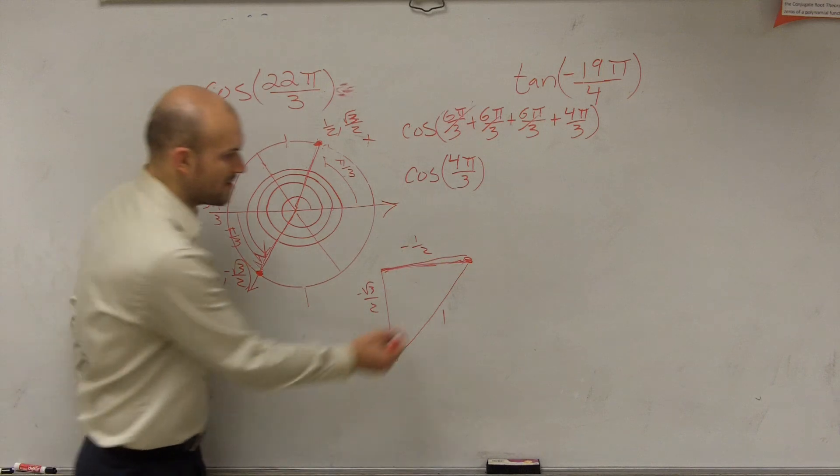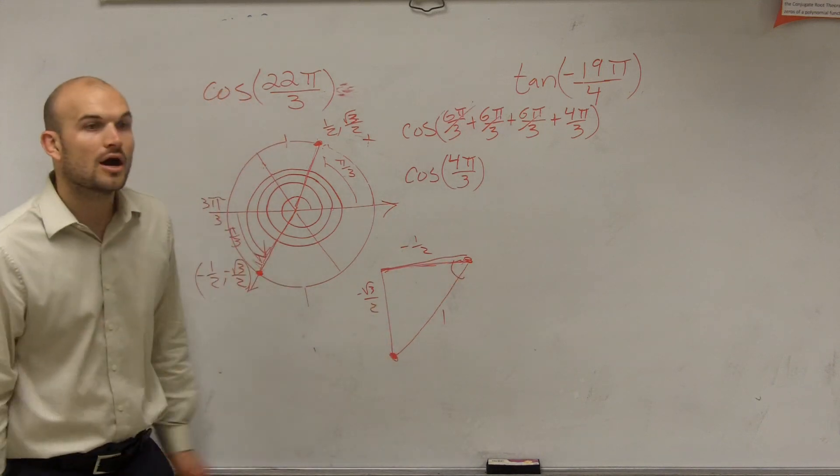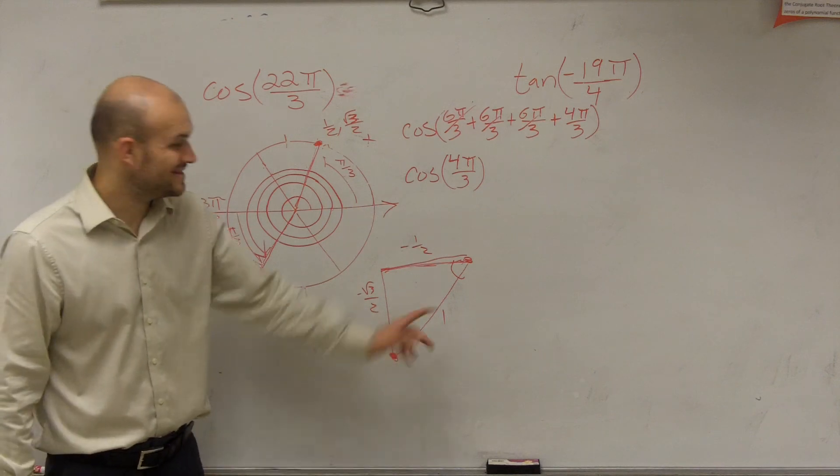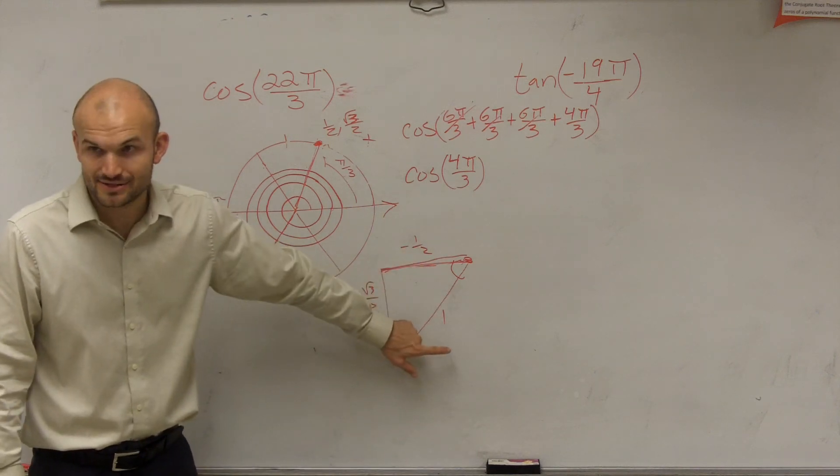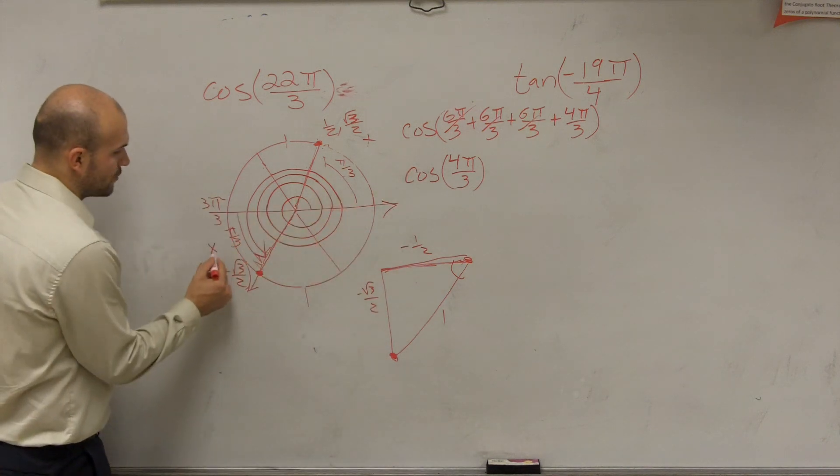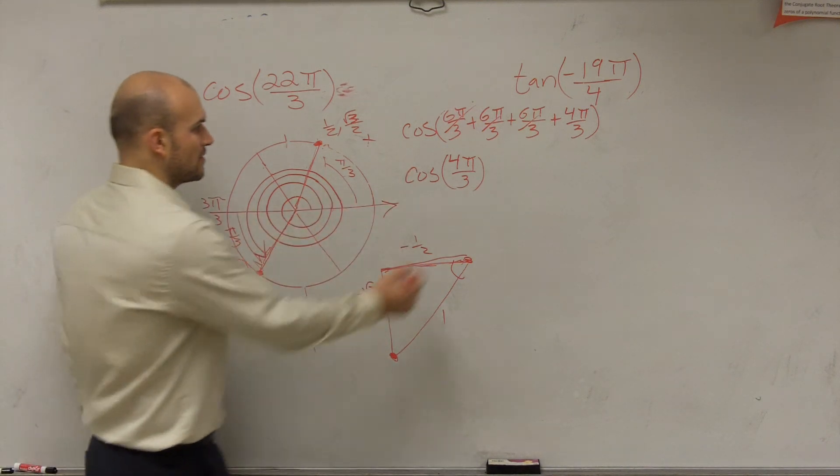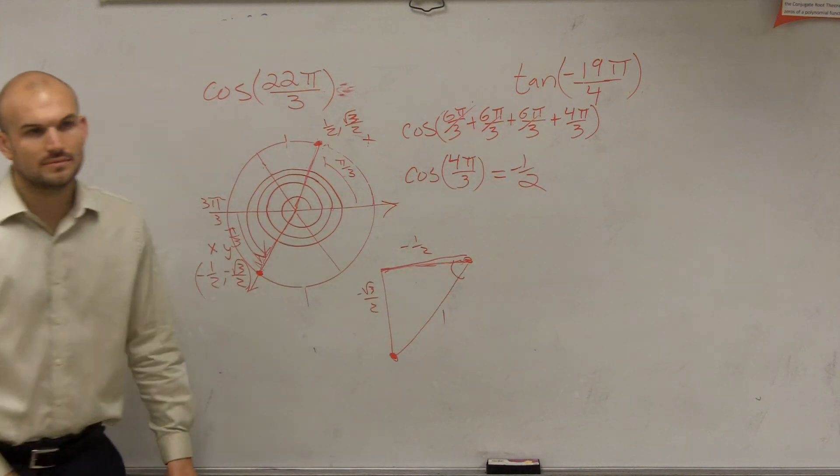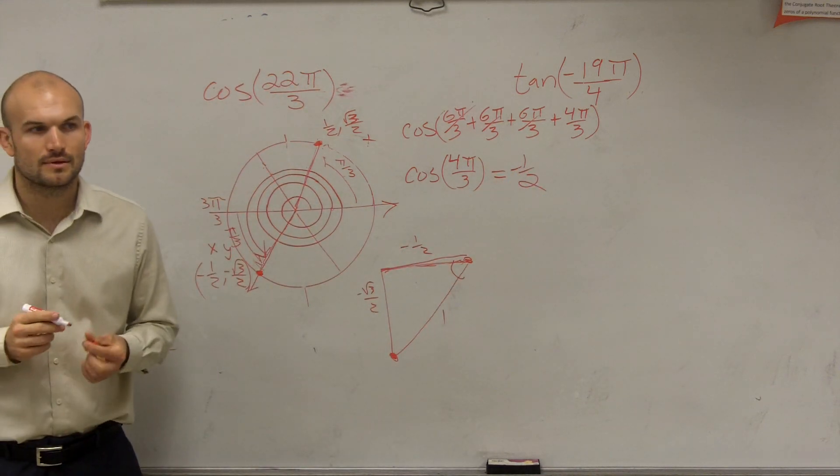And our hypotenuse is 1. Cosine is what? And remember we're dealing with this angle. Our cosine is going to be dealing with what? You guys really need to remember these. Adjacent over hypotenuse, or what we abbreviated in our notes is just the x-coordinate of your coordinate point. So therefore, this is equal to negative 1/2.